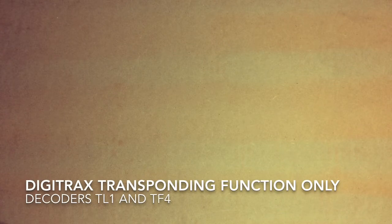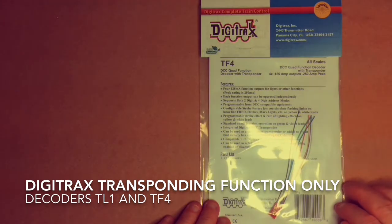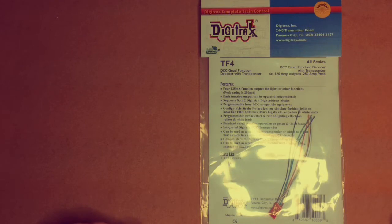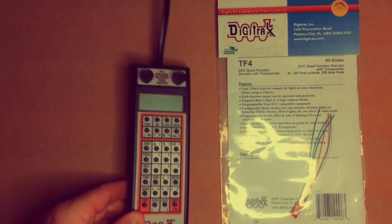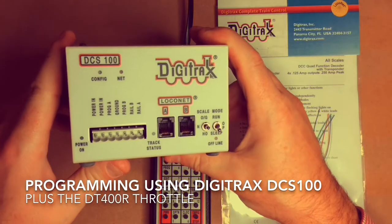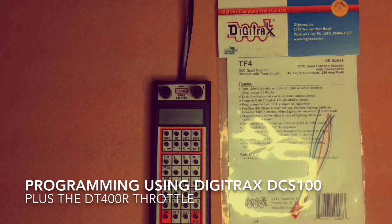Hello everyone, it's Digitrax Dad back and we're continuing our theme of programming transponder decoders. Tonight we're going to program a TF4 Digitrax transponder decoder. This is a function decoder—instead of just one function like the TL1, this one has four functions. We'll be programming the TF4 using the old DT400 throttle and my now superseded but very capable DCS-100 unit. Let's get into it.